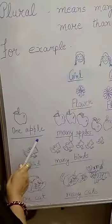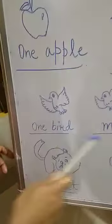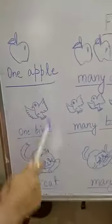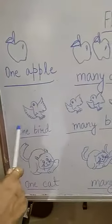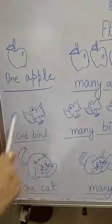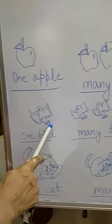One apple, many apples. One bird, many birds. Student, this one is singular or plural? This one is singular because here is one bird.